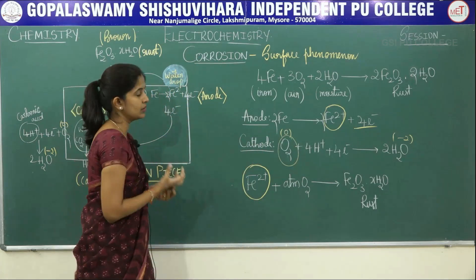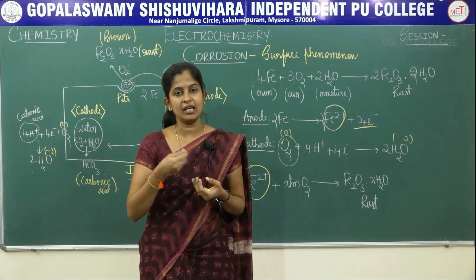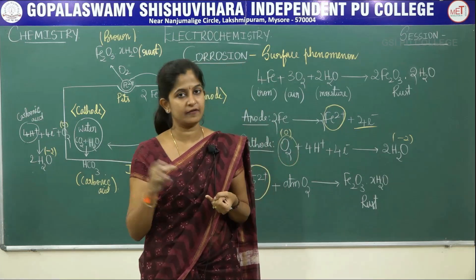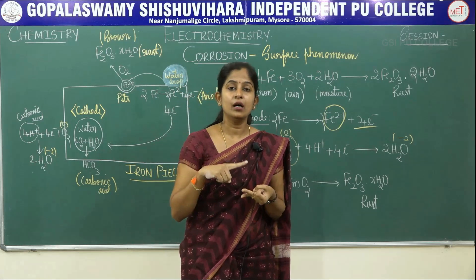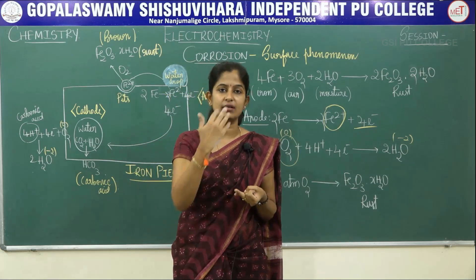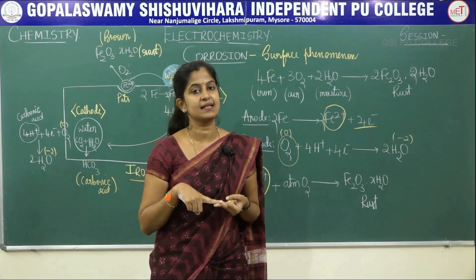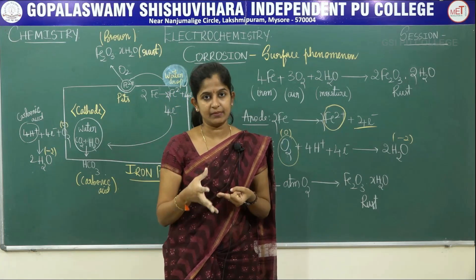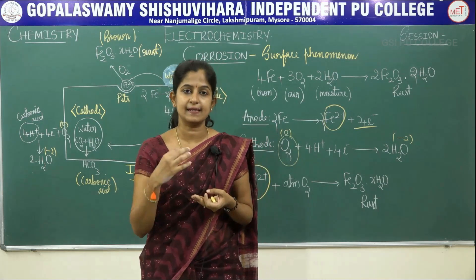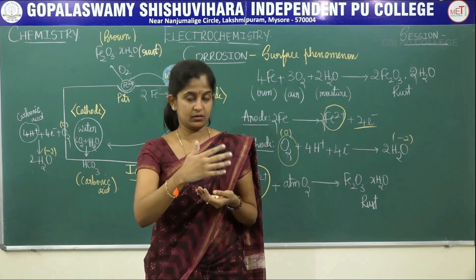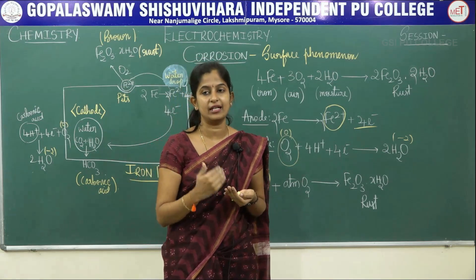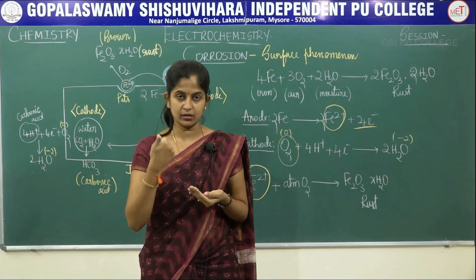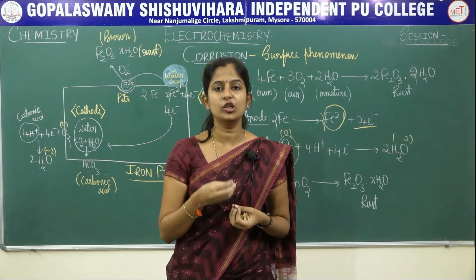Next is how to prevent corrosion. There are many methods: one is painting the surface of the metal, which even a common man knows prevents rusting. Another is greasing the surface of the metal so it is not in direct contact with atmospheric oxygen. Third is galvanizing — electroplating another less-reactive metal onto the iron. The agenda of all these methods is to prevent the corroding metal surface from being in direct contact with atmospheric oxygen and moisture content. These are the three important methods for preventing corrosion.